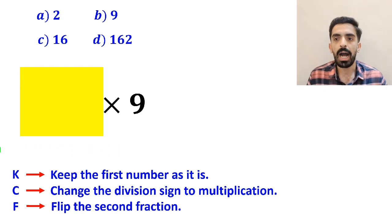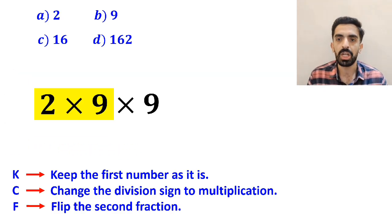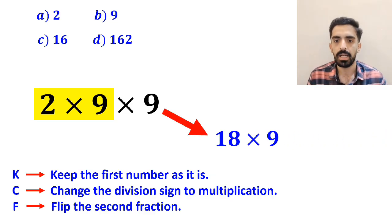So, we remove the highlighted part and replace it with 2 times 9, which simplifies the expression to 18 multiplied by 9, which finally gives us the answer 162.